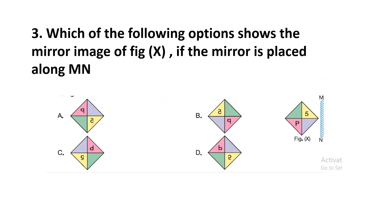Question number 3. Which of the following options shows the mirror image of figure X, if the mirror is placed along MN? This figure X is given and we have to find the mirror image. The correct answer is Option B. These are repeatedly asked questions — you can solve it by yourself also.